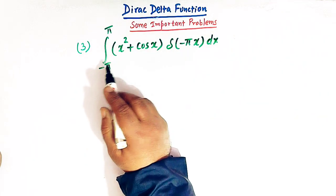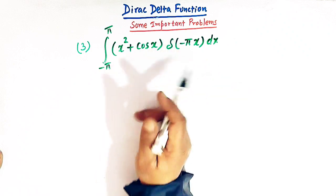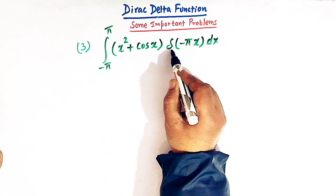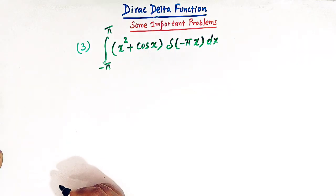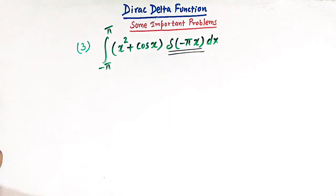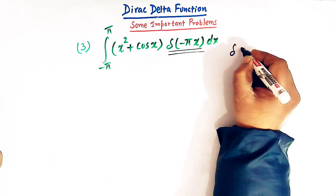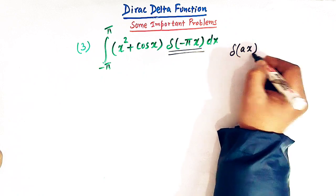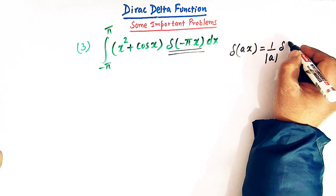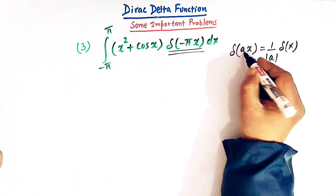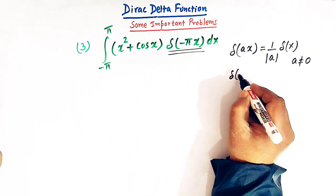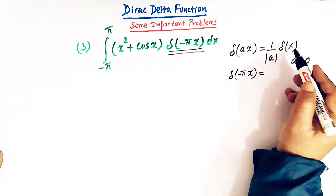Let us consider this third problem. We have to compute the integral from minus pi to pi of (x squared plus cos x) times delta of minus pi x. We'll make use of one important property of the Dirac delta function which says that delta of ax is equal to one over the absolute value of a times delta of x, where a is not equal to zero. So delta of minus pi x can be written with the help of this property.